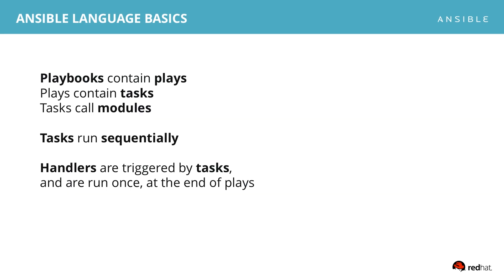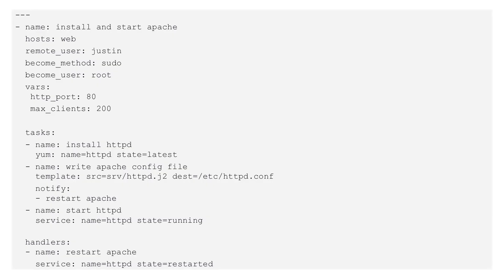Now let's talk playbooks. Playbooks contain plays, which have as part of them tasks. Tasks call modules. Tasks also run sequentially, so they'll work like you'd expect if you were to manually step through your list of processes on the command line. Next, we'll introduce the idea of a handler, which can be triggered by a task and is run once at the end of a play. Here's an example of a playbook which has one play, three tasks, and a handler.